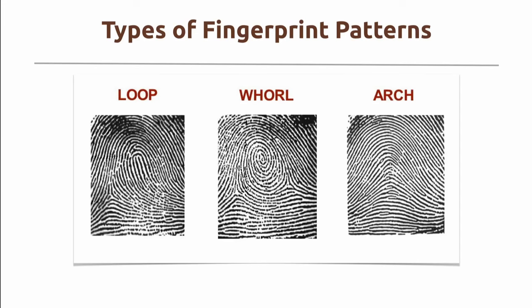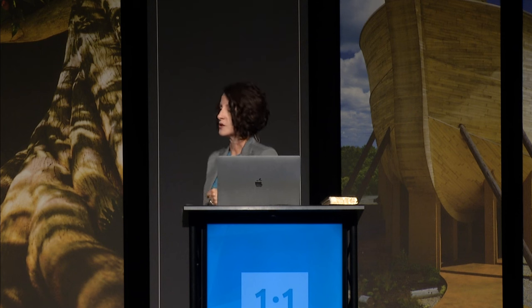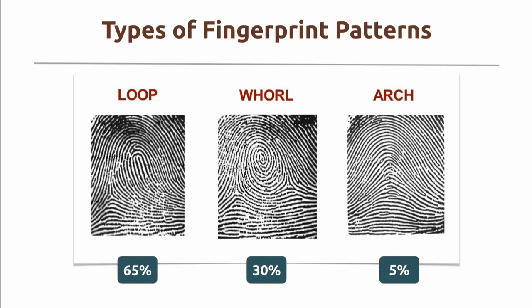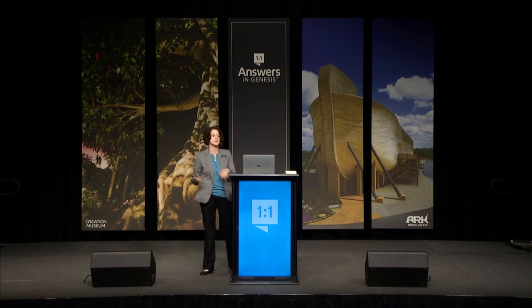There are three types of fingerprint patterns — loops, whorls, and arches — for humans as well as other animal species. In humans, the most common is the loop pattern at 65%. Whorls are second at 30%. The rarest type is the arch at only 5% — so if you find out you have an arch pattern, be excited. Now here's what's important: every individual has 20 unique fingerprint patterns and no one will ever have fingerprints matching anyone else who's ever lived. What makes you unique is the little individual characteristics inside your fingerprint patterns — those are called minutia, which basically means details.